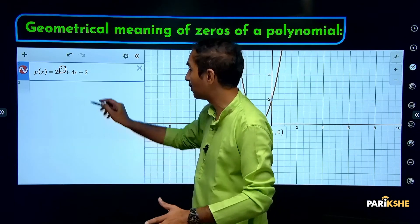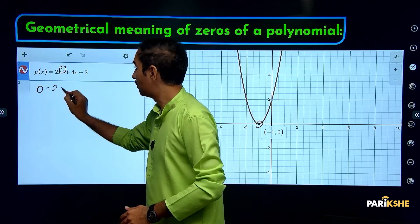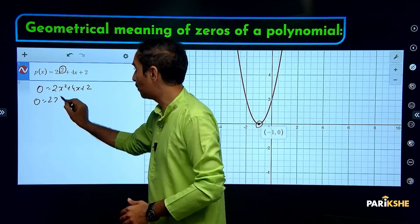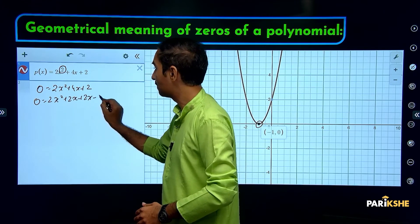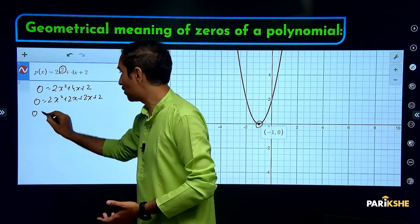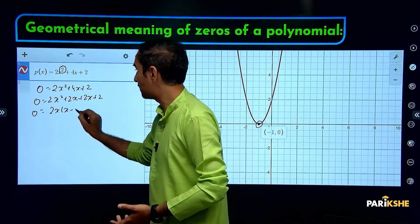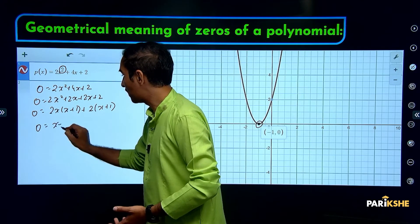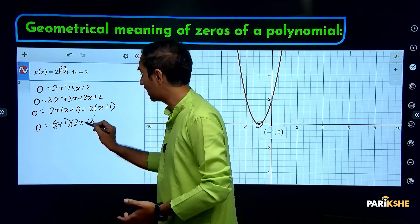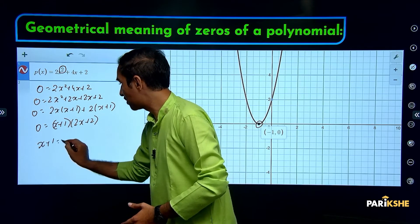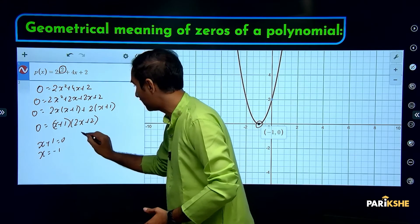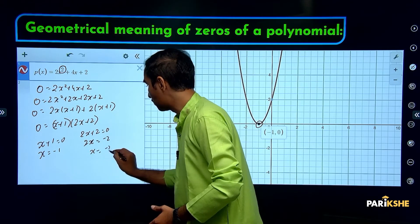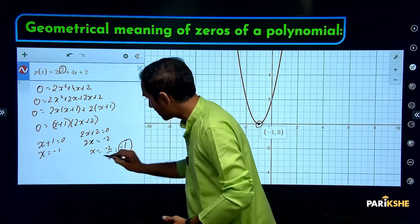Let's verify algebraically. First step: make it equal to zero. 2x² + 4x + 2 = 0. Factorize by splitting: 2x² + 2x + 2x + 2 = 2x(x + 1) + 2(x + 1) = (x + 1)(2x + 2) = 0. So x + 1 = 0 gives x = -1, and 2x + 2 = 0 also gives x = -1. Here we get -1, and here also -1.